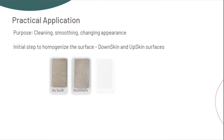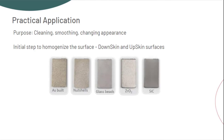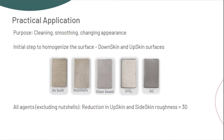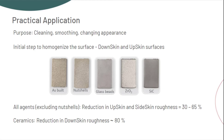Small samples were blasted with nutshells, glass beads, ceramics, and silicon carbide. All blasting agents excluding nutshells led to a reduction in the up skin and side skin roughness of 30 to 65%. More significantly is the effect in down skin and supported areas — with ceramics, the down skin roughness was reduced by nearly 80%.